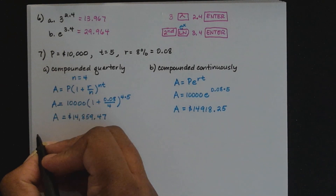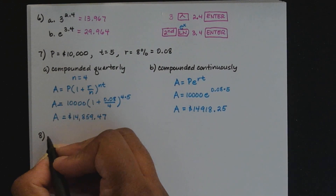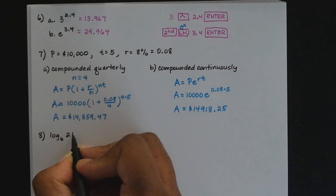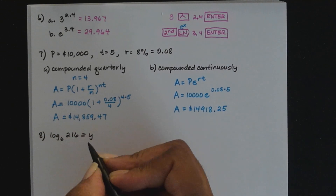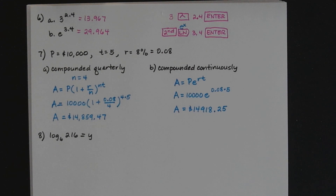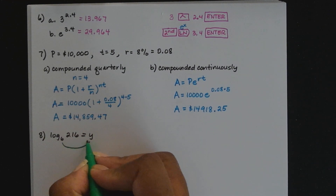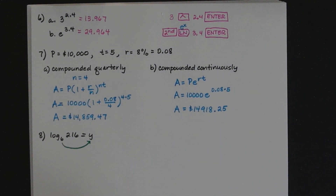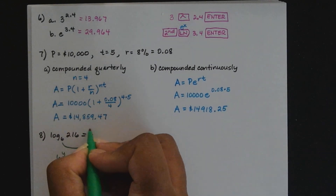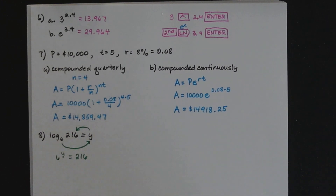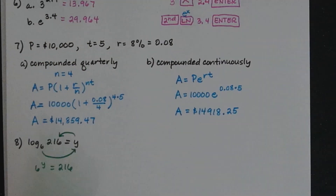Number 8 is writing the equation log to the base 6 of 216 equals y in its equivalent exponential form. This is logarithmic form — we want exponential form. We start with the subscript 6 as the base; the variable after the equal sign becomes the exponent; and what we're taking the log of becomes the result. So log to the base 6 of 216 equals y becomes 6 to the power of y equals 216.